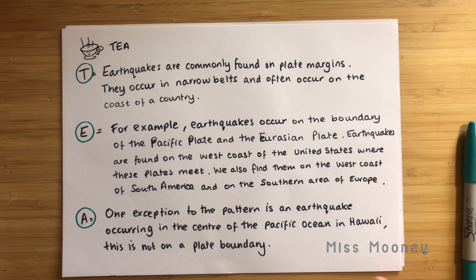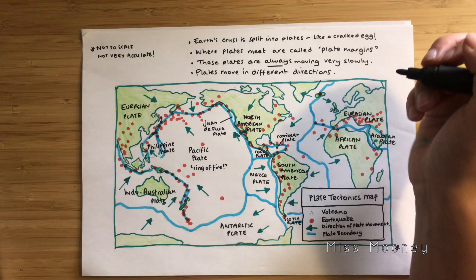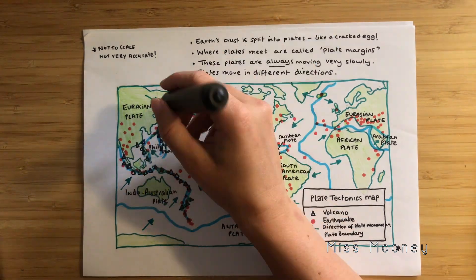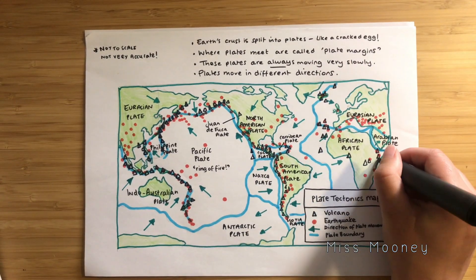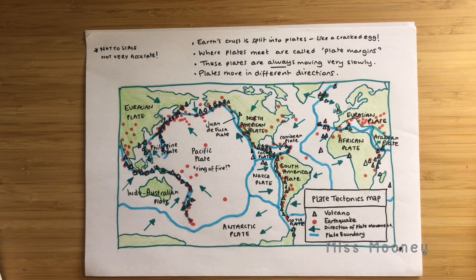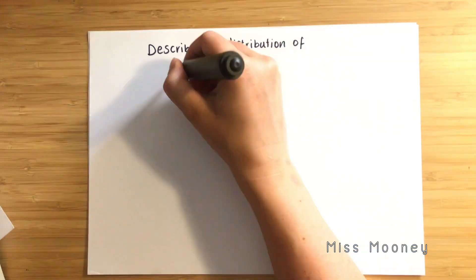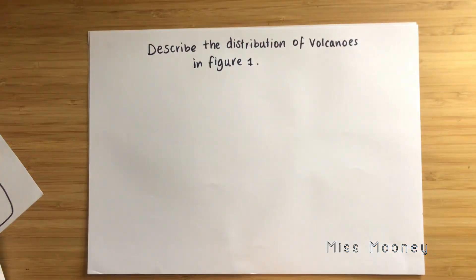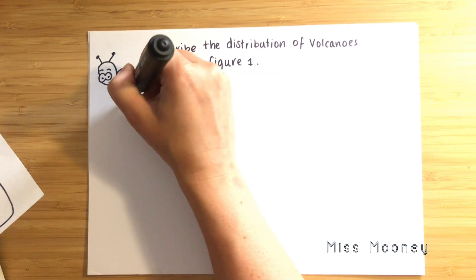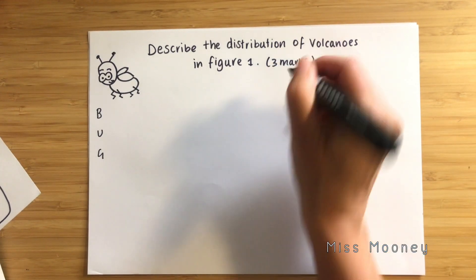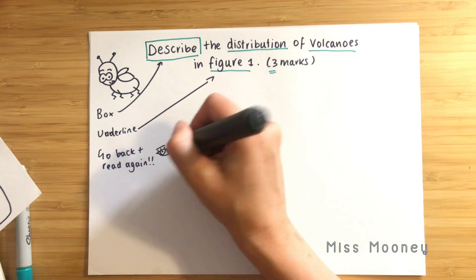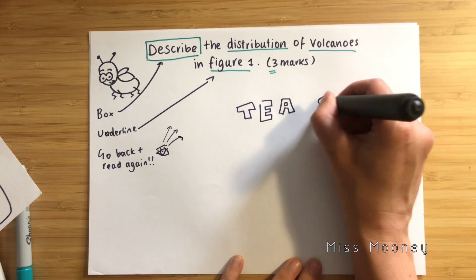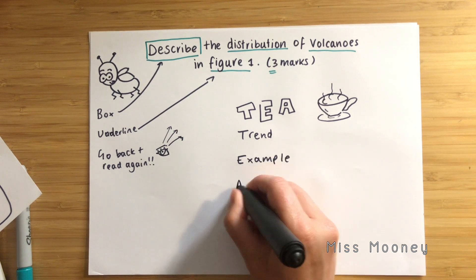That's all for earthquakes for now — next up we are going to be looking at the volcanic distribution. I'm going to draw these on as little triangles, and just as you did with earthquakes, while I'm drawing these on can you spot any patterns, examples, and anomalies? Now it's your turn to answer a question on your own. Remember you need to BUG the question first and then use the TEA structure — trend, example, anomaly. Remember capital letters for all named places, avoid explaining, and use compass directions to be a little bit more specific. You may want to Google a map showing the distribution of volcanoes online — I will add a link to the description box.